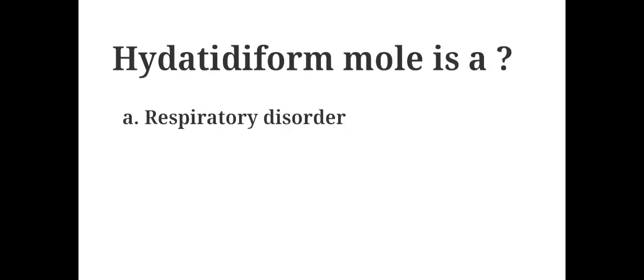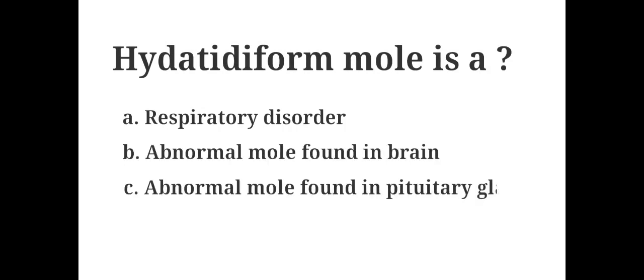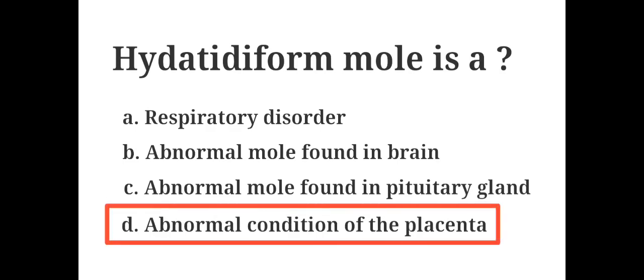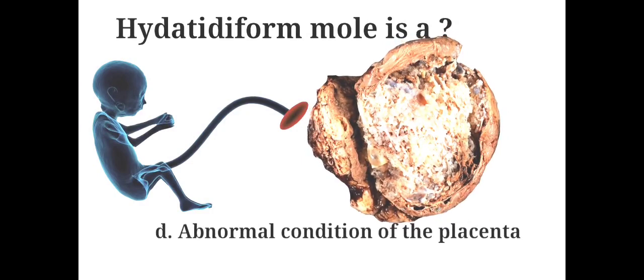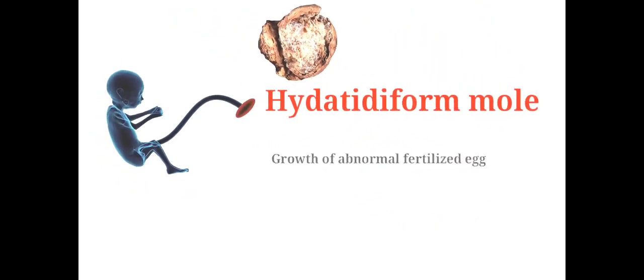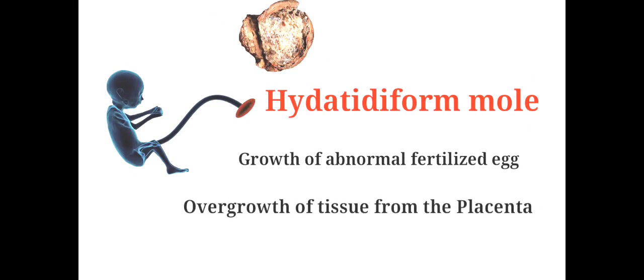Hydatidiform mole is: A. A respiratory disorder, B. Abnormal mole found in brain, C. Abnormal mole found in pituitary gland, D. Abnormal condition of the placenta. The answer is D. Abnormal condition of the placenta. A hydatidiform mole is a growth of an abnormal fertilized egg or an overgrowth of tissue from the placenta.